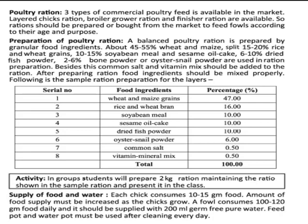And preparation of the faulty Rations. A balanced faulty ration is prepared from granule of 14 ingredients: about 45 to 55 percent weight in maize, and split 50 to 20 percent of rice and wheat grains, 10 to 15 percent soybean meal, and sesame oil cake, and 6 to 10 percent dried fish powder, and 2 to 6 percent bone powder, and oyster snail powder used in ration preparation. Beside this, common salt and vitamin mix should be prepared to the ration. After preparing a ration, protein gradient should be mixed properly, following the sample ration paper for these layers.